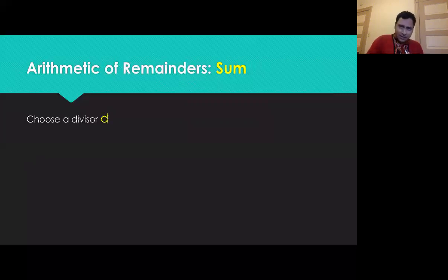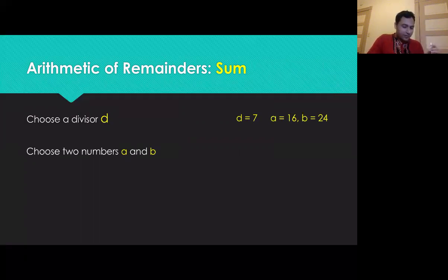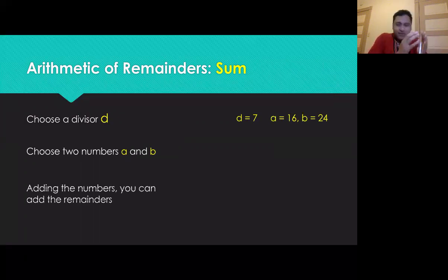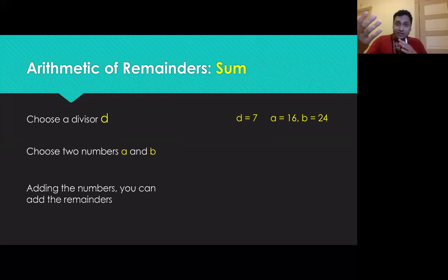Choose a divisor D — suppose it's seven for our example. Now choose two numbers A and B: suppose A is 16 and B is 24. If you add the two numbers, you will also add their remainders. That's the general principle. If the sum of the remainders is larger than the divisor, you may need to divide again.